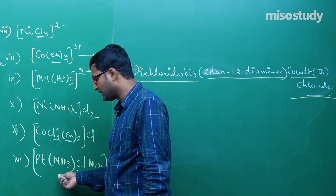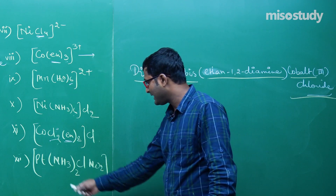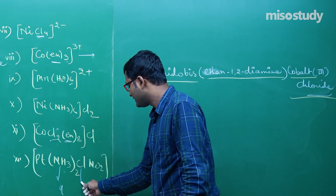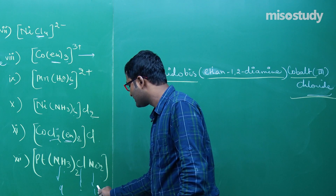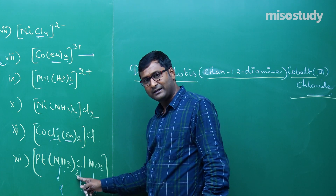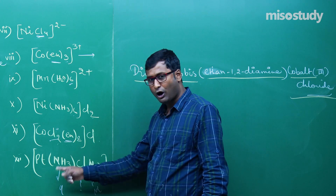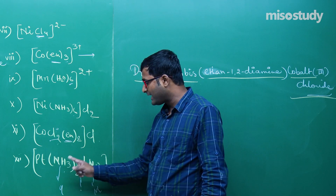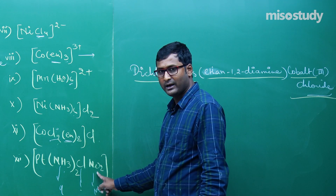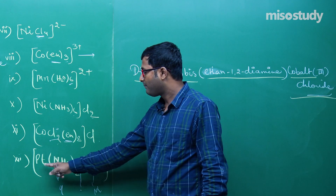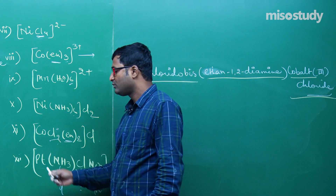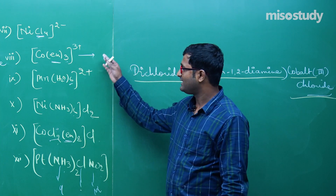For [Pt(NH3)2ClNO2]: three ligands — NH3 is amine (A), Cl is chloro (C), NO2 is nitro (N). Alphabetical order: amine first, then chloro, then nitro. The donor atom for NO2 is nitro. Name: diaminechloronitroplatinum(II).